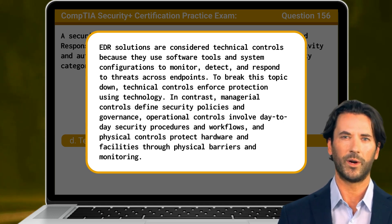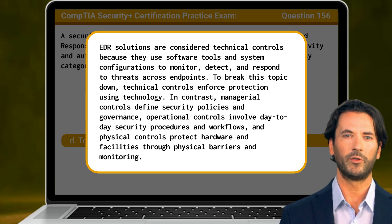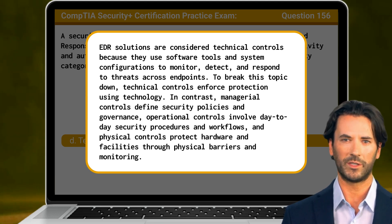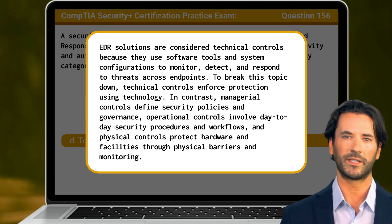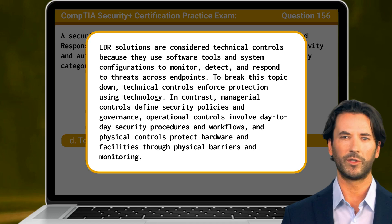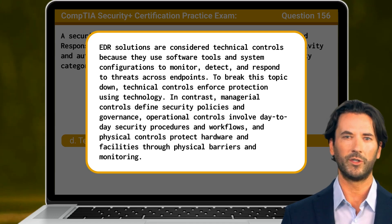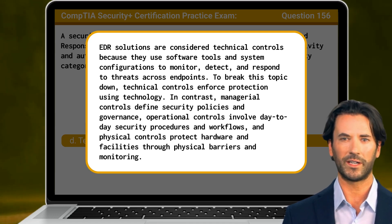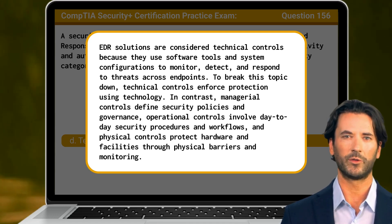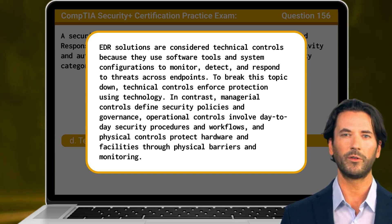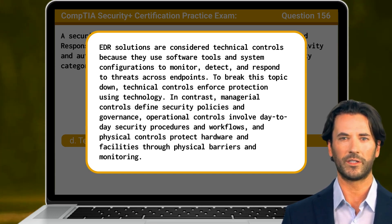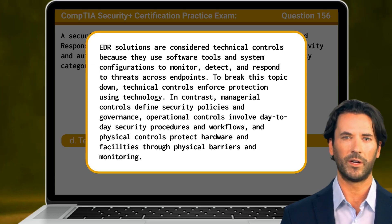To break this topic down: technical controls enforce protection using technology. In contrast, managerial controls define security policies and governance. Operational controls involve day-to-day security procedures and workflows, and physical controls protect hardware and facilities through physical barriers and monitoring.